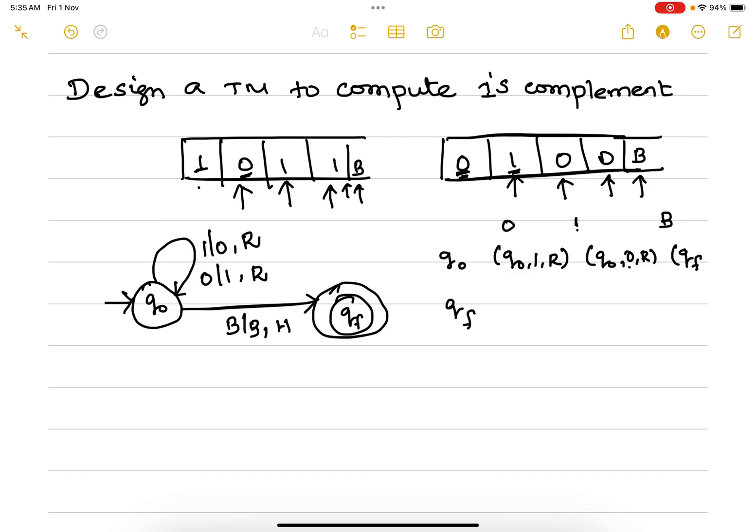When a blank comes, go to the final state, change it to blank, and halt. So these are the three transitions we have, and this is going to be our transition table.